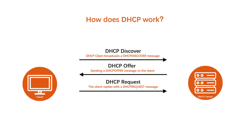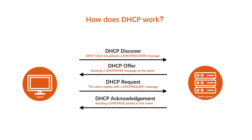Step 4: DHCP Acknowledgement. When the DHCP server receives the DHCP Request message from the client, the configuration process enters its final phase. The acknowledgement phase involves sending a DHCPACK packet to the client. This packet includes the lease duration and any other configuration information that the client might have requested.